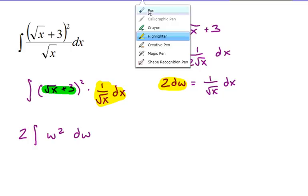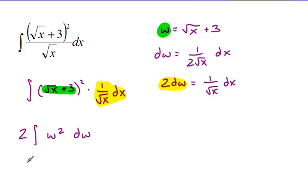Let's back up for a second and make sure we see what happened. w was equal to this right here, so we ended up with w squared. And 2dw was equal to all of this. So this part got replaced by 2dw. We're ready to do our antiderivative now. We've got 2 times 1 third w cubed plus c. And our final answer: 2 thirds root x plus 3 cubed plus c.